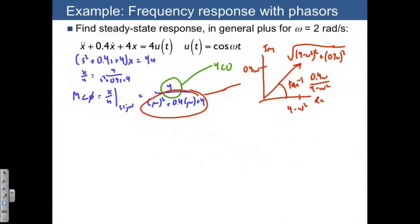We're now in a position to describe M angle phi. M angle phi is therefore going to be 4 divided by square root of 4 minus omega squared squared plus 0.4 omega squared at an angle of minus arctangent. The reason why we have a minus arctangent is because this is the denominator.